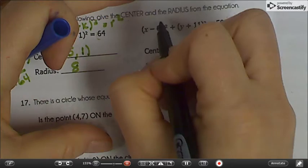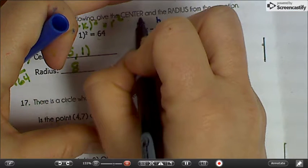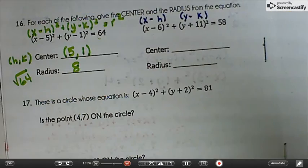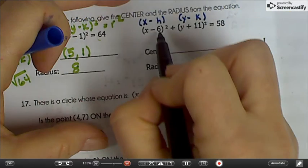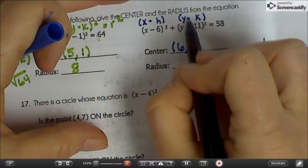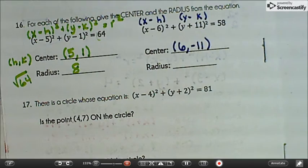For this one, we have our h and k. Remember though that the formula is x minus h and y minus k squared. So here, since these are negative, then the center has to be 6. But since this changed signs, it means that it's really the opposite. 6 and negative 11.